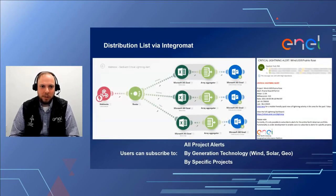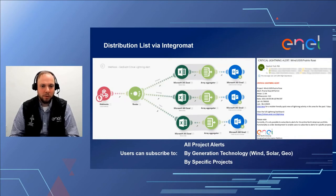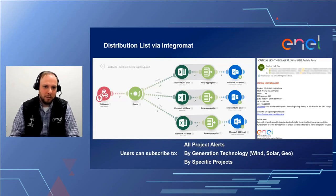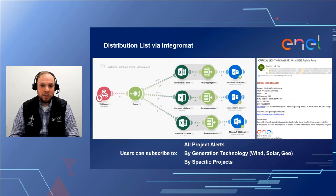Here's an example of how the distribution list process works and why we're choosing to use Integromat for this. This is a low-code situation—pretty much no code in this example. The webhook is received from GeoEvent Server and routed based on whether it matches the criteria of all projects, a specific technology, or a specific project. The distribution list is stored in an Office 365 Excel spreadsheet—one worksheet for each distribution list. The Integromat process aggregates that into an array and puts it into an email sent through our Office 365 connection. On the right, you can see what the output of one of these alerts looks like.